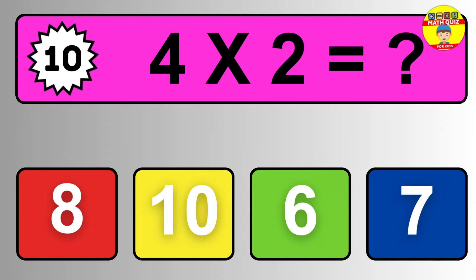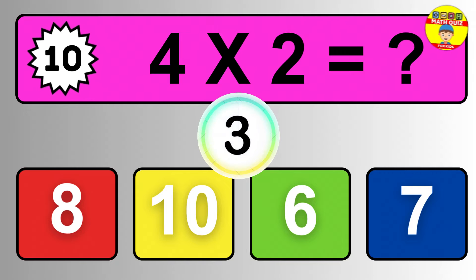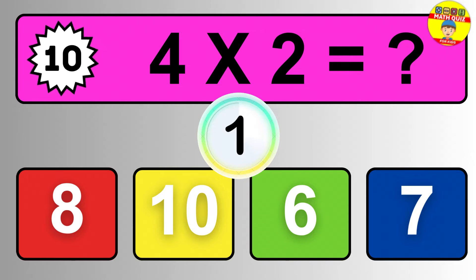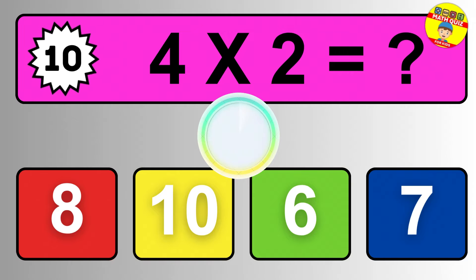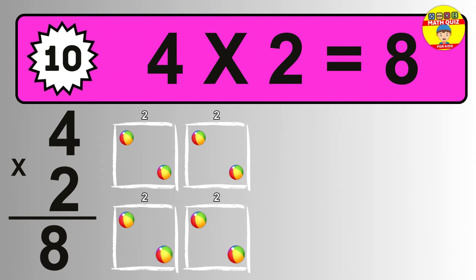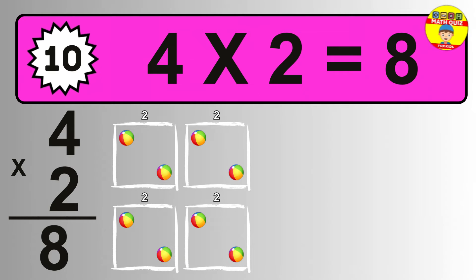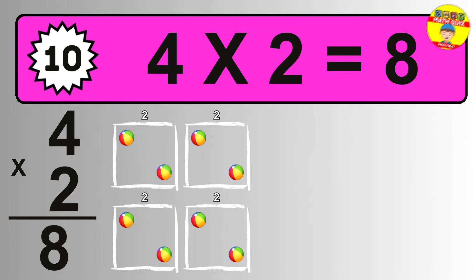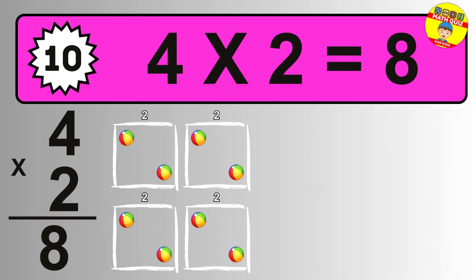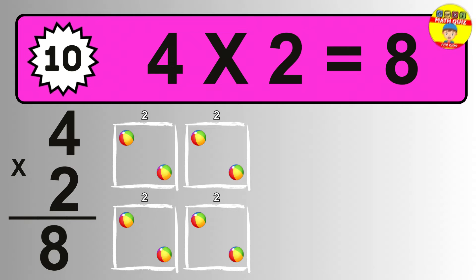Question ten. Four times two equals what? The answer is four times two is eight. To calculate, we have four groups with two balls each one. So how many balls do we have? Eight balls.